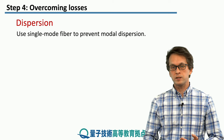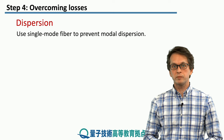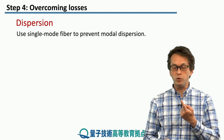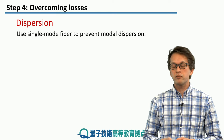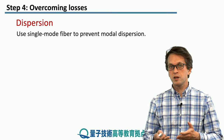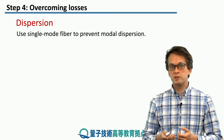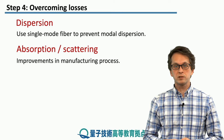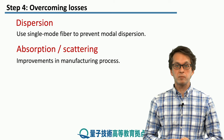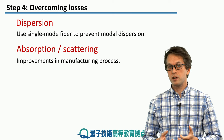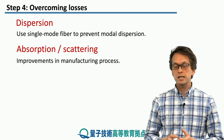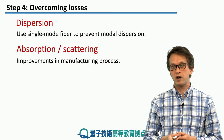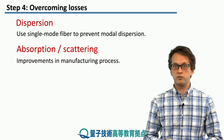We saw that the signal and the different modes become dispersed in a multi-mode fiber, but this is not the case in a single-mode fiber. There's only one mode, so there's nothing to be dispersed. Therefore, if mode dispersion is a big source of error, it's best to switch to a single-mode fiber. We saw that absorption and scattering can be improved by the manufacturing process, because the main source there are the impurities in the fiber. So if we can limit the amount of impurities in the fiber, we can also limit these two sources of losses.